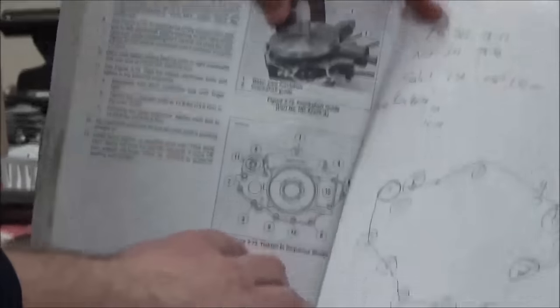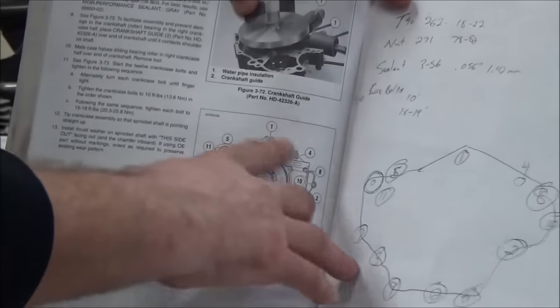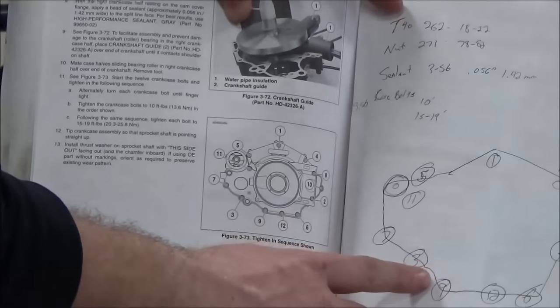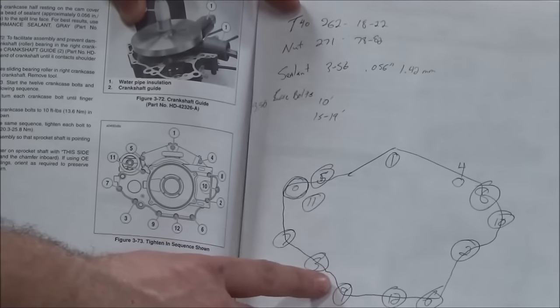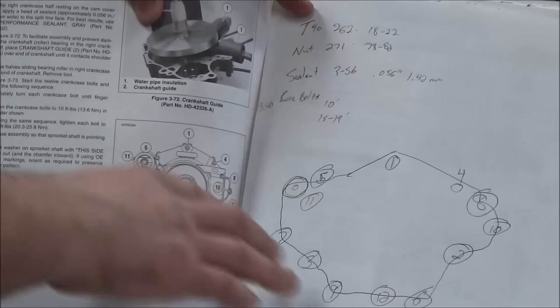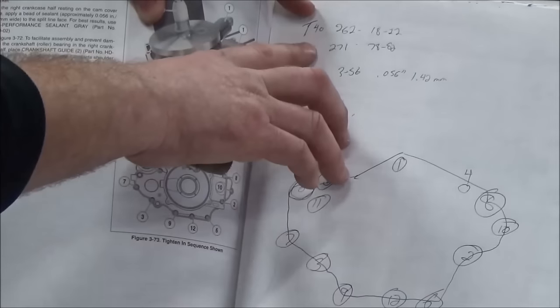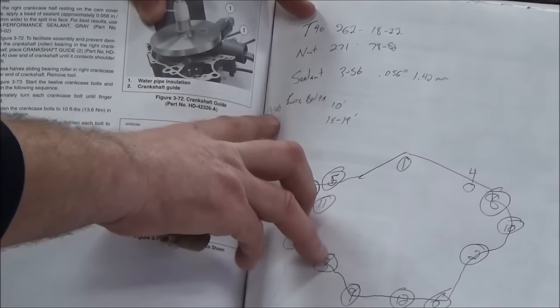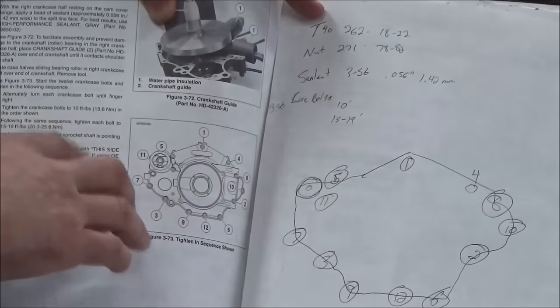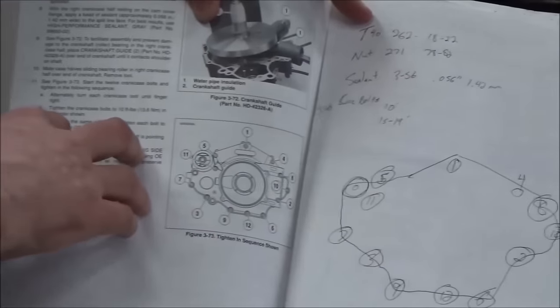If you look down here, we're going to come back to this. This is the procedure and pattern we're going to use for torquing. I've taken a piece of scratch paper and duplicated that because I like to be done with the service manual and put it out of the way. You'll notice on my scratch paper I have torques, Loctite references, page numbers. I just grab the information and move on with it.